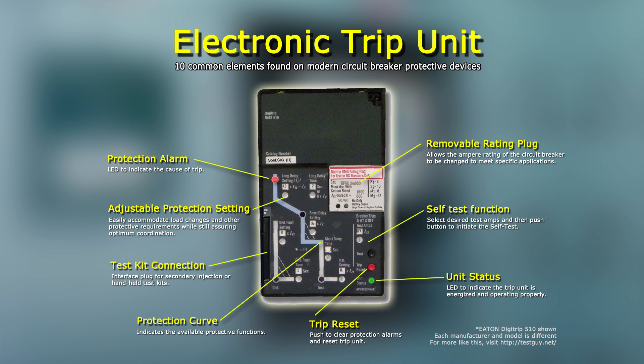Number 8: Self-test Function. Some modern solid-state trip devices and protective relays contain integrated self-test functions that require no separate test kit. Trip unit self-tests are easier to perform than any other test and can be conducted more frequently. However, it is important to note that self-tests, like secondary injection tests, only check the trip unit logic and do not verify the current sensors and associated wiring.